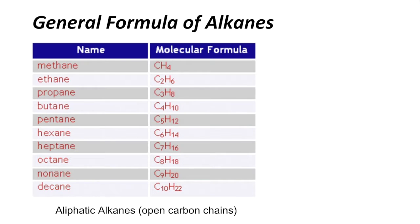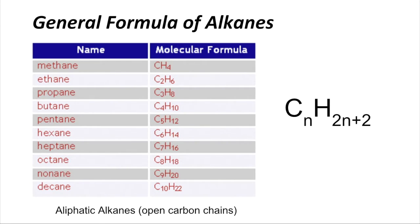So what is the general ratio between carbons and hydrogens? It's CnH2n+2, where n stands for the number of carbons.